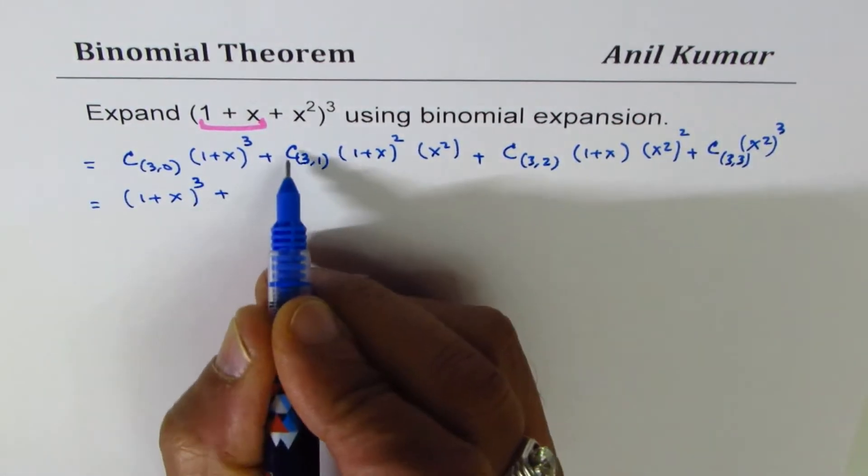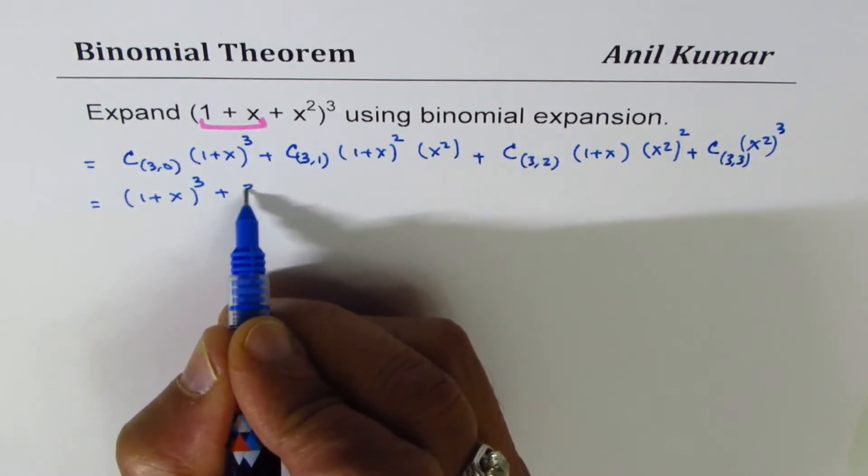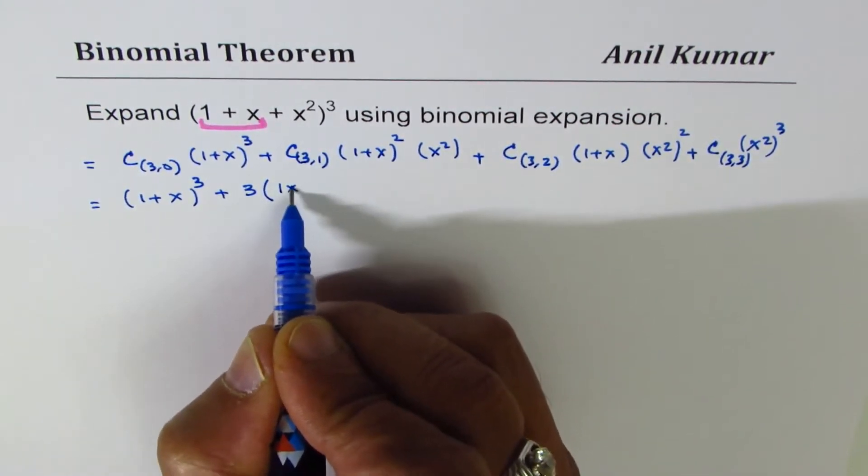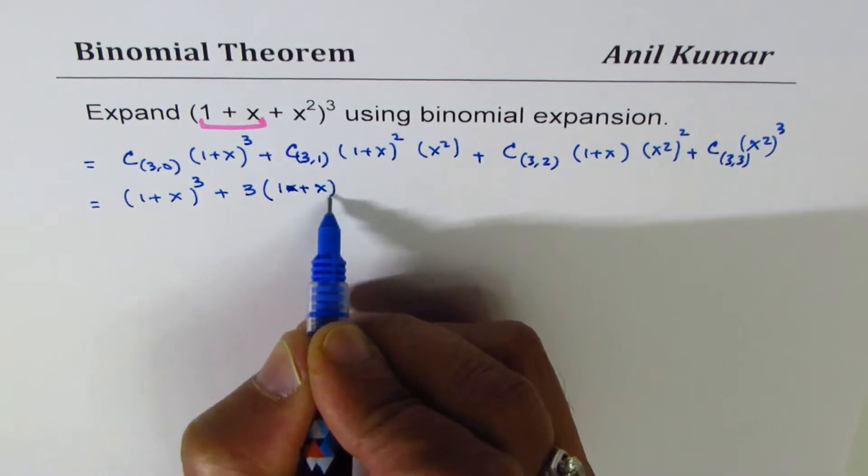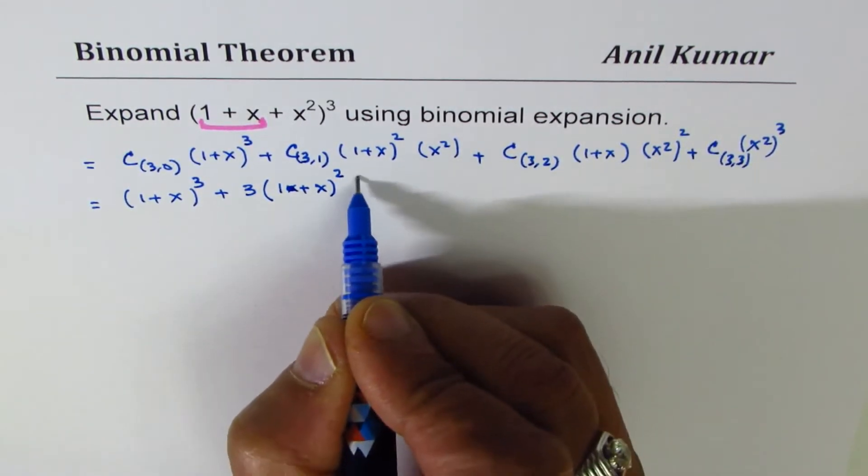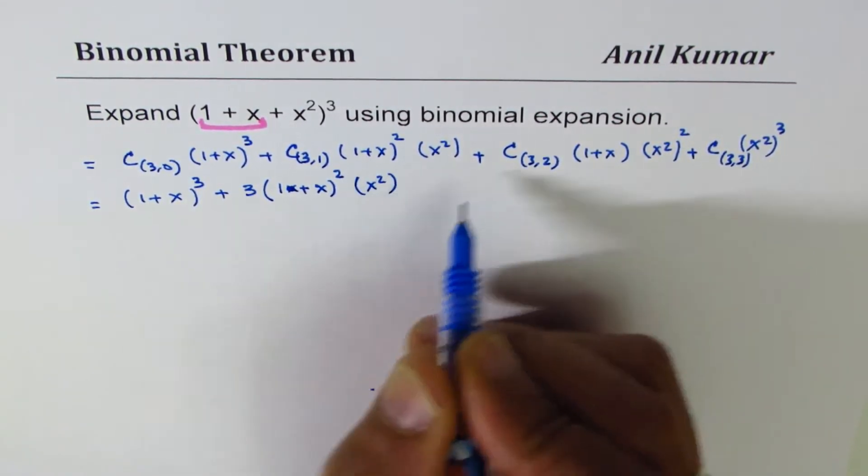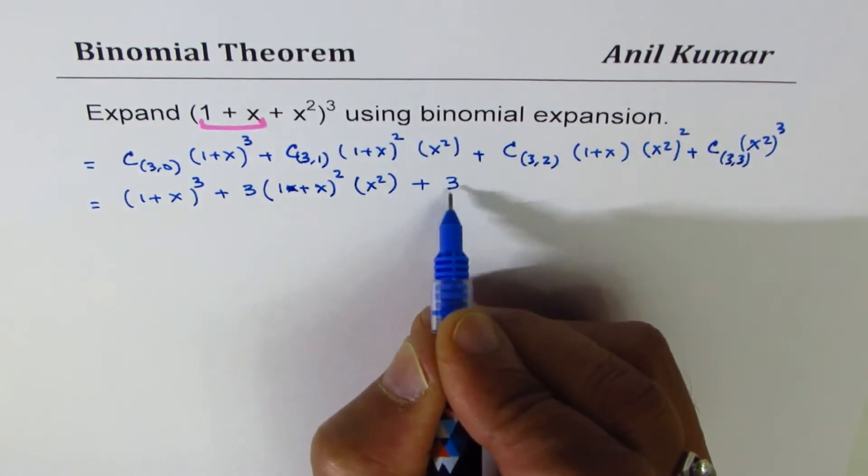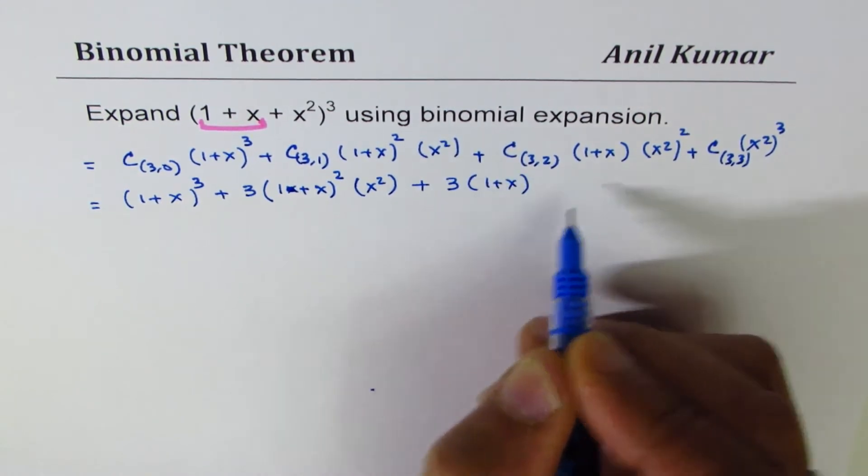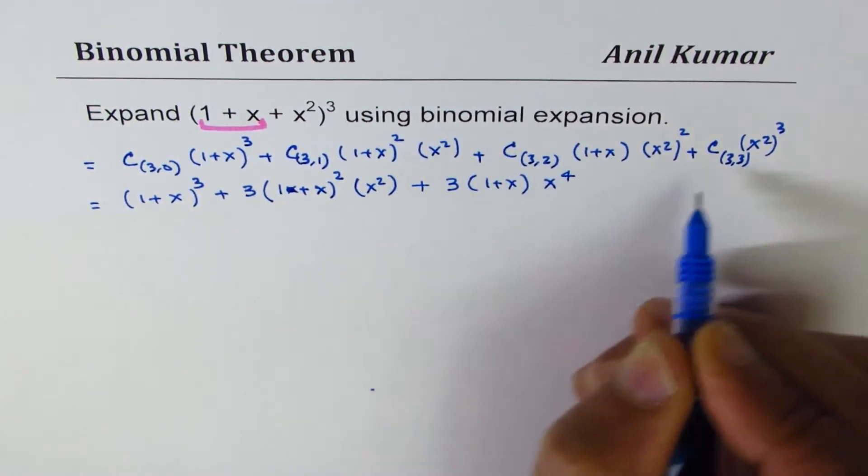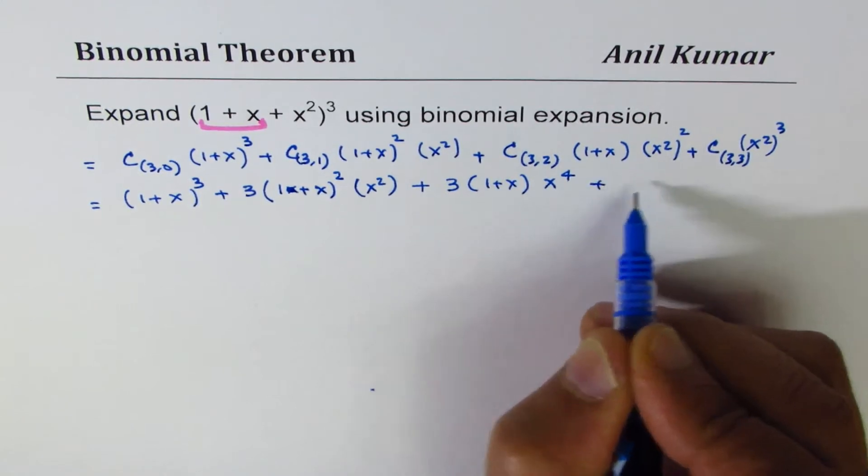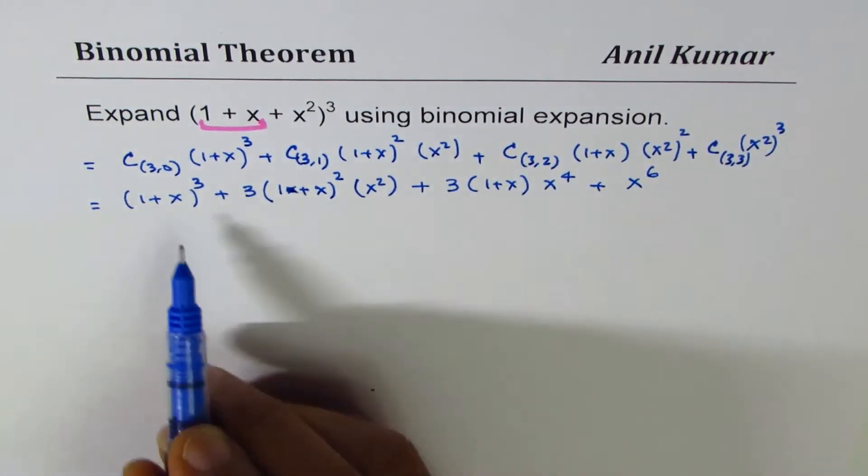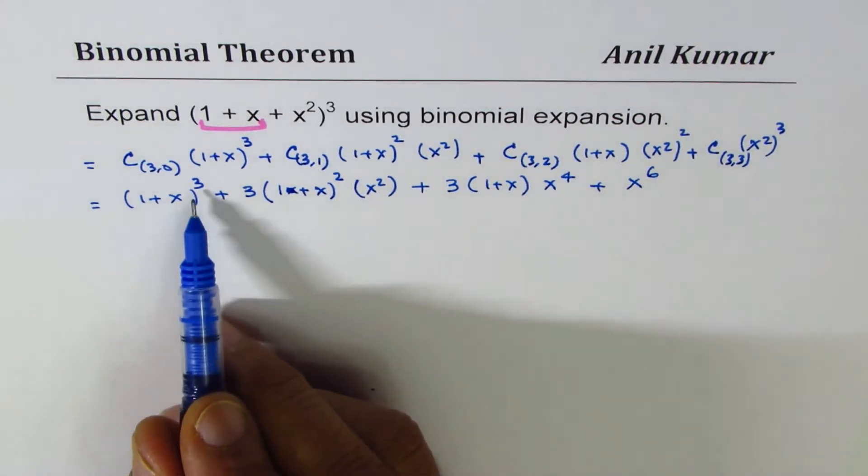What we get here is (1 + x)³ since C(3,0) is 1, plus C(3,1) is 3 so we get 3(1 + x)²(x²) plus C(3,2) is also 3, so 3(1 + x)(x⁴) and that is 1 times x⁶.